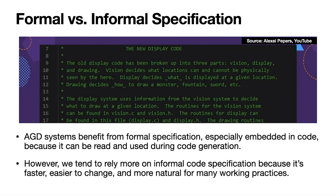As you might have gathered, AGD systems can only really benefit from formal specification — it has to be something they can access through code. This screenshot here is a large comment included in the NetHack source code for humans to read to understand how the display system works, but this is completely invisible to a system trying to analyze the code automatically. We tend to rely on informal specification more often because it's more natural for us, easier to edit and change, and just tends to be less hassle.